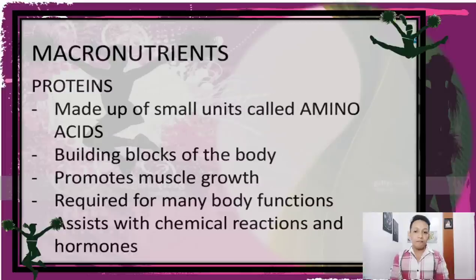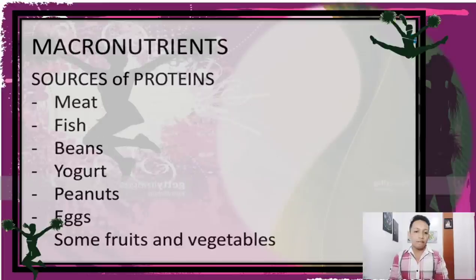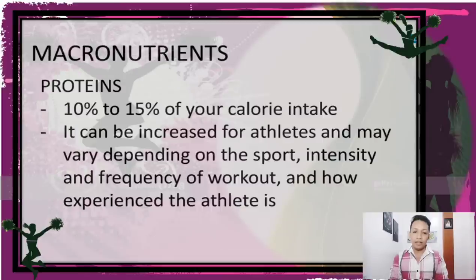Proteins are made up of small units called amino acids — the building blocks of the body. They promote muscle growth, are required for many body functions, and assist with chemical reactions and hormones. Sources of protein include meat, fish, beans, yogurt, peanuts, eggs, and some fruits and vegetables. Proteins should be 10% to 15% of your calorie intake, and can be increased for athletes depending on the sport, intensity and frequency of workout, and the athlete's experience level.